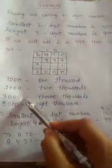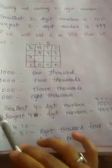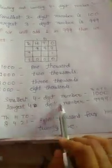Similarly, 2000, 3000, 8000, 9000, 10,000. So, the smallest 4-digit number is 1000 and the largest 4-digit number is 9999.